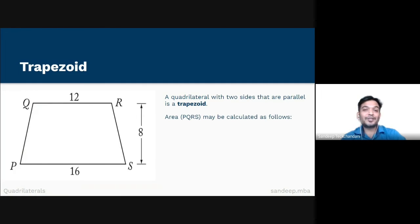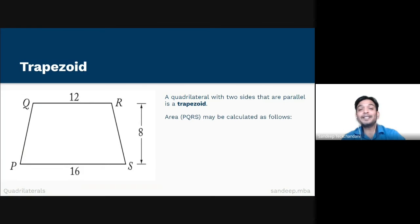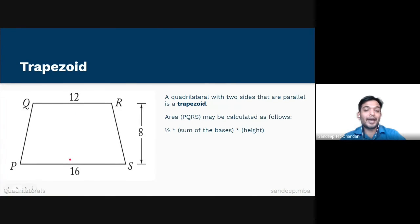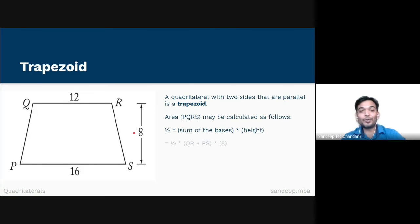Please learn this formula for your exams: the area of a trapezoid equals half times the sum of the lengths of the bases multiplied by the height. The bases are QR and PS and their sum is 12 plus 16, that is 28, and the height is 8. Therefore half times 28 times 8 equals 112 square units.